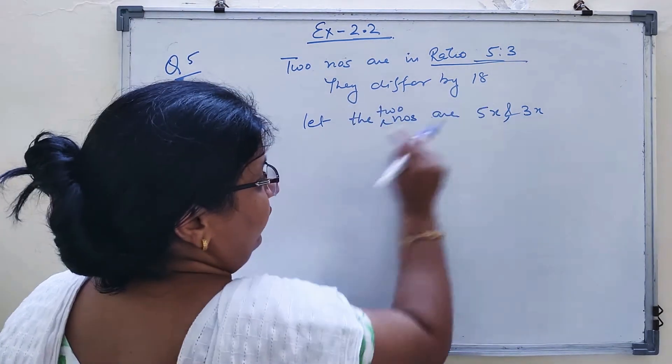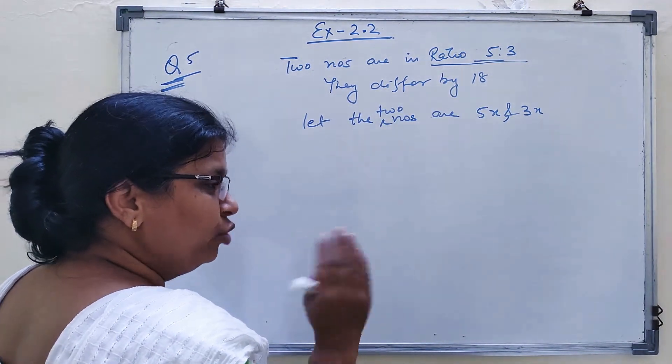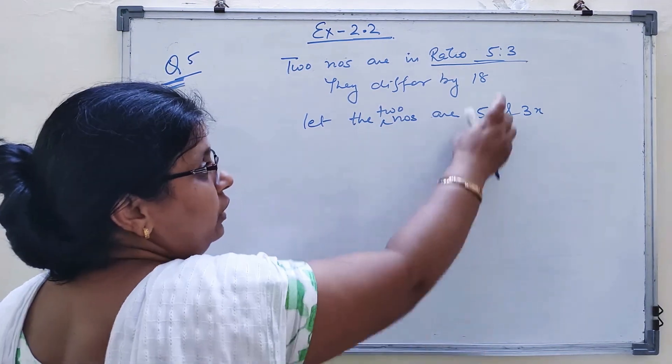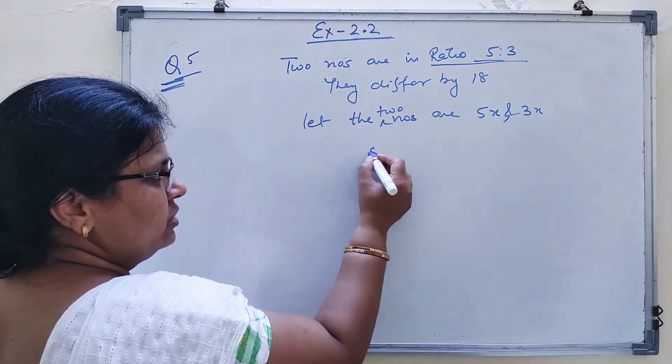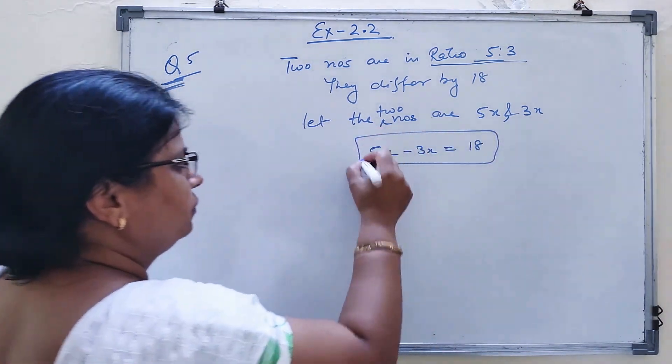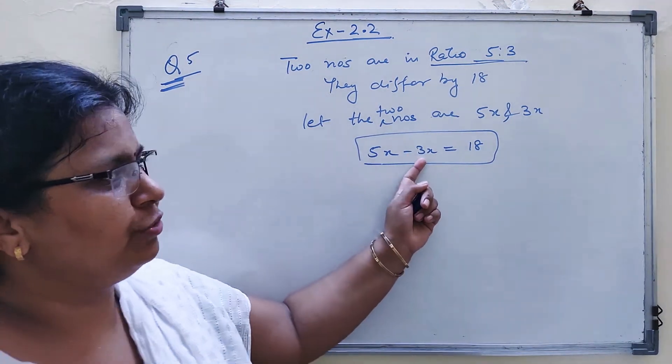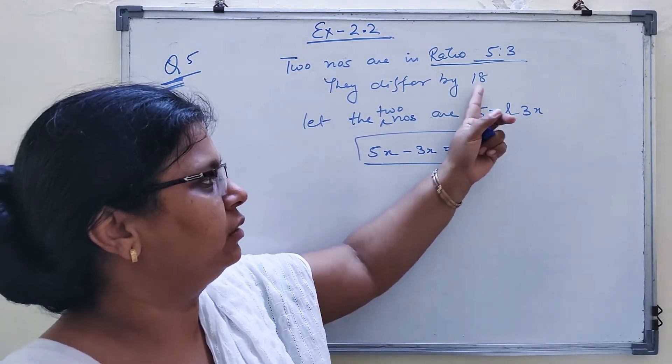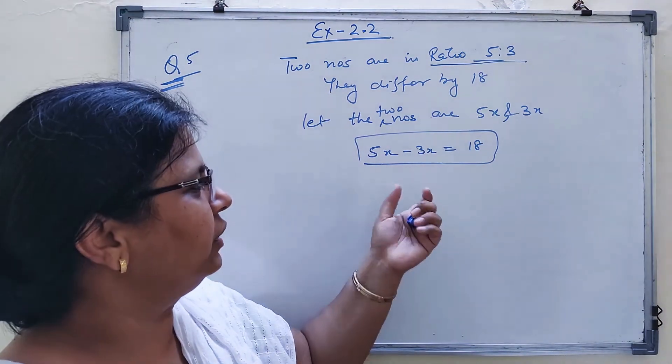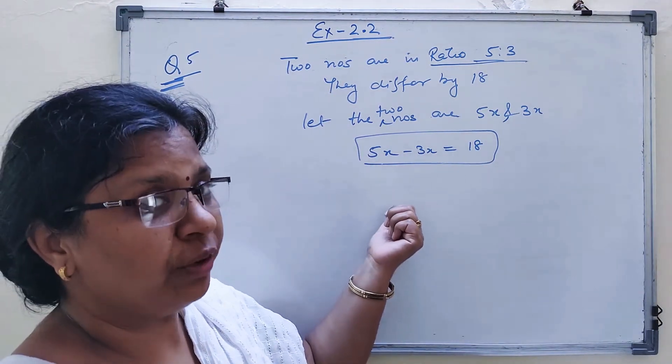They differ by 18. Differ by 18 means the difference between the two values, if you subtract them, is 18. So it is 5x minus 3x equal to 18. This is the equation. You will get the value of x.